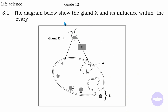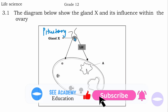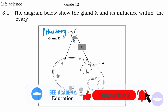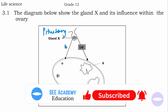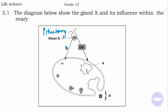Here is the question. The diagram below shows gland X and its influence within the ovary. We have gland X and we have an ovary. We are told that this is luteinizing hormone, LH, and we know that LH is secreted by the pituitary gland — so that means this gland here is the pituitary gland. Another hormone secreted by the pituitary gland is FSH, which is follicle stimulating hormone, and this line represents FSH.